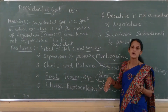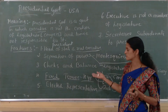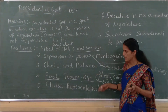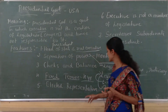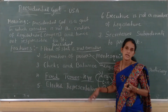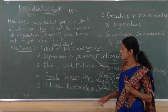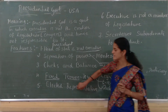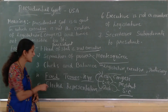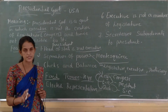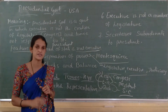The president cannot contest for more than two consecutive terms. The fifth feature is elected representative. In the presidential form of government, the president is an elected representative, elected by the citizens of the United States of America through the electoral college.